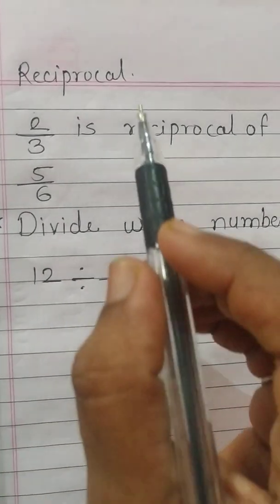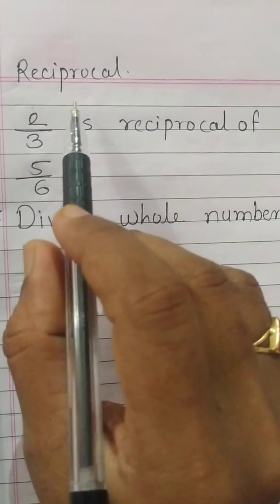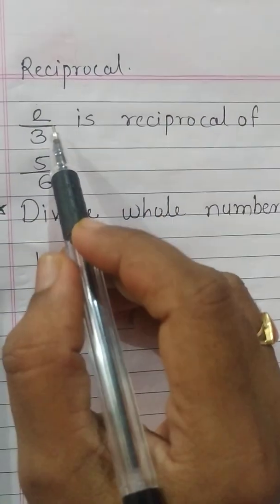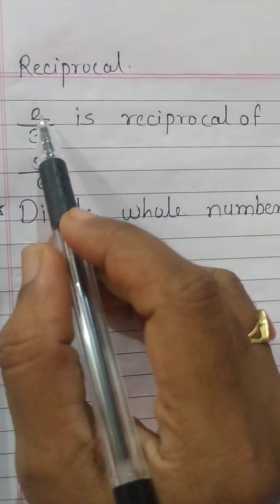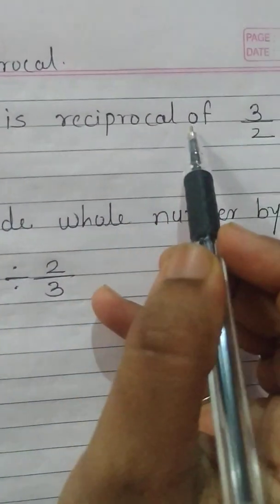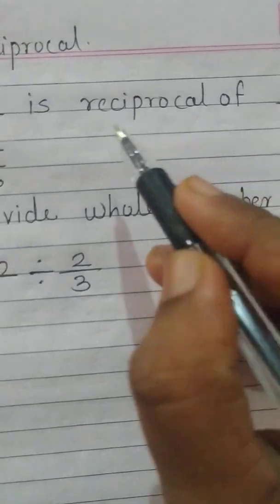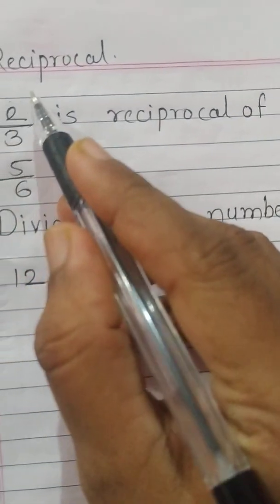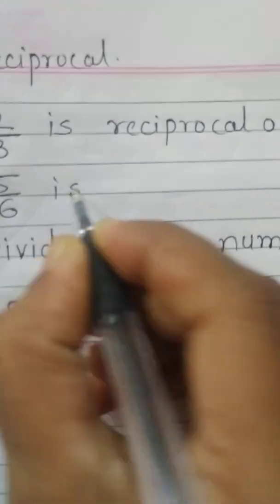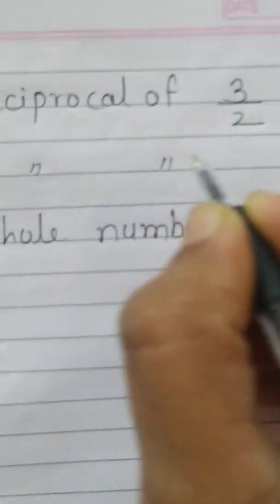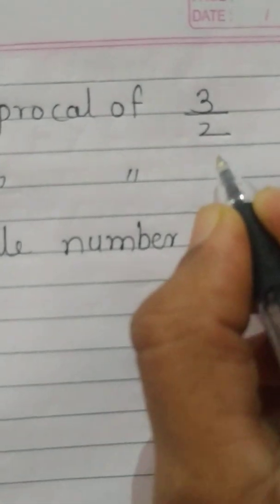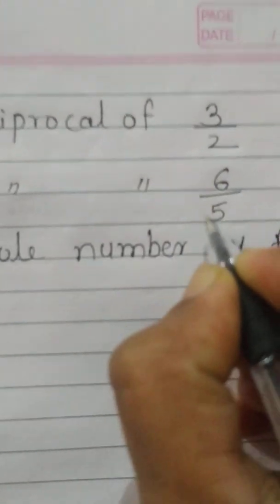In the last video we learned the reciprocal of a fraction. The reciprocal of 2/3 is 3/2 — we simply change the numerator and denominator. Similarly, 5 is the reciprocal of 5/6, or 6/5 is the reciprocal of 5/6.